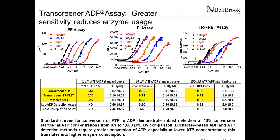This slide depicts standard curves from three different formats — FP, FI, and TR-FRET — showing a range of ATP concentrations from 0.1 micromolar all the way up to 1 millimolar. All three formats allow measurement at different ATP concentrations, although FP is more suited for this purpose. The table below gives Z-prime values; at one micromolar ATP with 10% conversion — meaning 0.1 micromolar ADP detection — we get really good Z-prime values for all three formats, with FP having a slight edge.